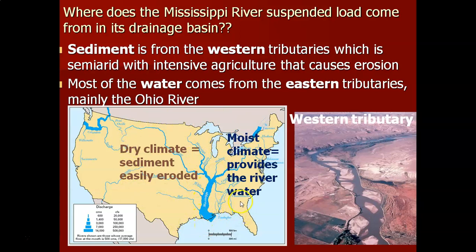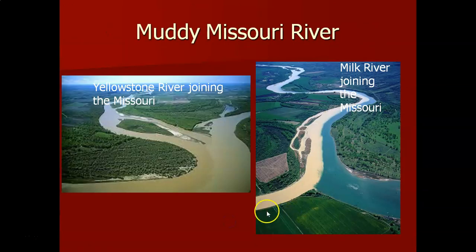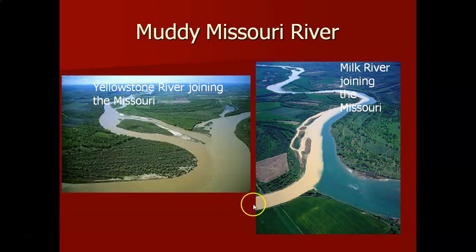Most of the sediment comes from the western tributaries, but most of the water for the river actually comes from the eastern tributaries. East of the Mississippi is a rainy, moist climate where maritime tropical air from the Gulf of Mexico is caught in the westerlies, bringing moisture to the eastern U.S. The Yellowstone River, for example, flows into the Missouri River, and the Milk River — named for its white sediment — also feeds into the Missouri. There's a lot of erosion in those individual western drainage basins.